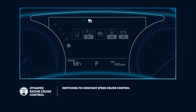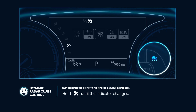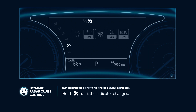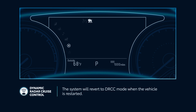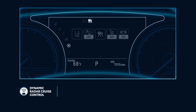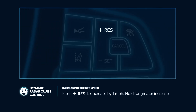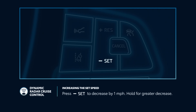DRCC can also switch to a standard Constant Speed cruising mode. To do this, press and hold the DRCC button until the indicator on the instrument panel changes from DRCC to Constant Speed. Please note, however, that the system will revert to DRCC mode when the vehicle is restarted. When the system is on in either mode, the set speed can be increased by one mile per hour by pressing the Plus Res button, or increased by larger increments by holding the button. Similarly, the set speed can be decreased by pressing or holding the Minus Set button.